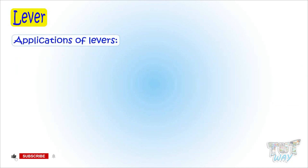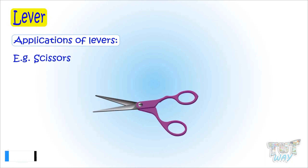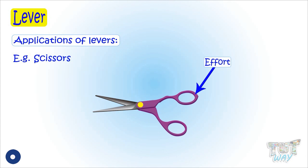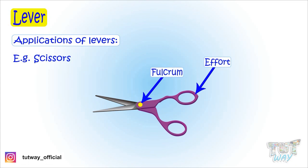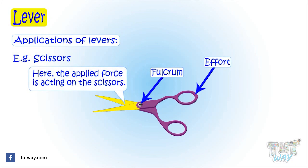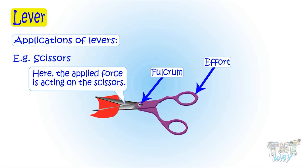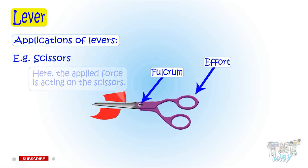Here we have a pair of scissors demonstrating three classes of lever. This is the point where you apply force, so this is the effort. This is the fixed support or fixed point, known as the fulcrum. This is where the applied force acts on an object — we apply force here and it cuts the paper here.